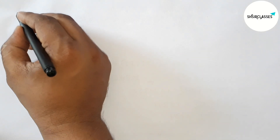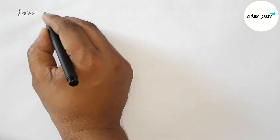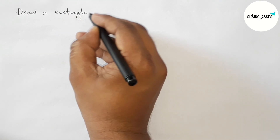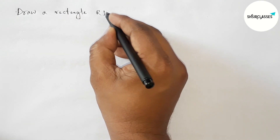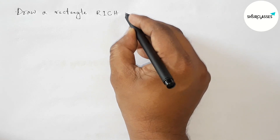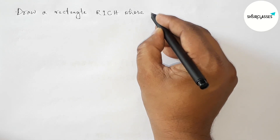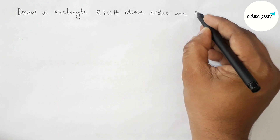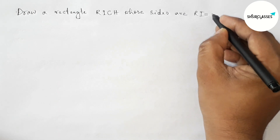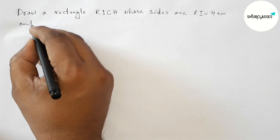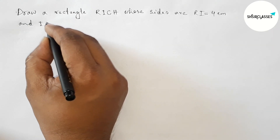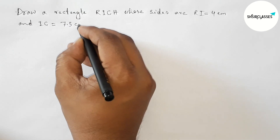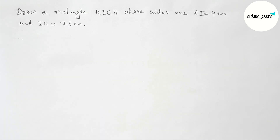Hi everyone, welcome to Essay Share Classes. Today in this video we have to draw a rectangle RICH, whose given two sides are RI equal to 4 centimeters and IC equal to 7.5 centimeters, in an easy way. Please watch the video till the end. Let's start.